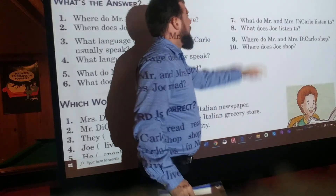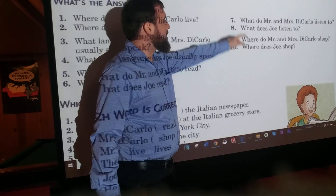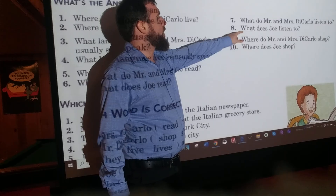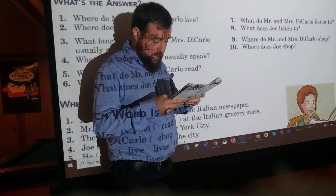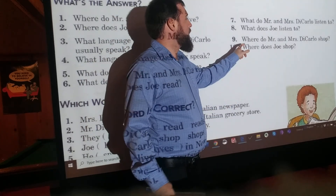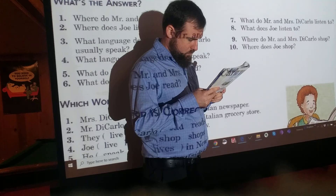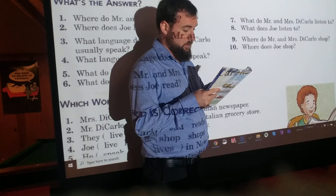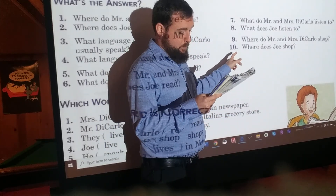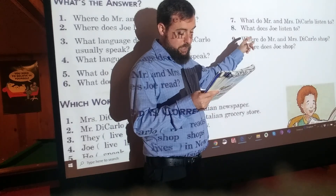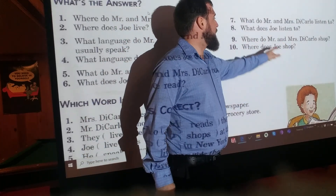Number seven: What do Mr. and Mrs. DiCarlo listen to? They listen to Italian radio programs. What does Joe listen to? He listens to American radio programs. Number eight: Where do Mr. and Mrs. DiCarlo shop? They shop in the Italian grocery store. Where does Joe shop? He shops at a big suburban supermarket and shopping malls. Important thing again — he shops, they shop.